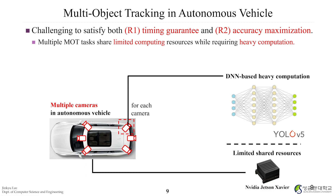However, it is challenging to satisfy both timing guarantee and accuracy maximization because resources are limited. Multiple tasks share limited computing resources while requiring heavy computations. We have multiple cameras in autonomous vehicles — for example, six cameras means six multi-object tracking tasks, each needing DNN-based heavy computations, but with very limited resources, to reduce cost and weight.